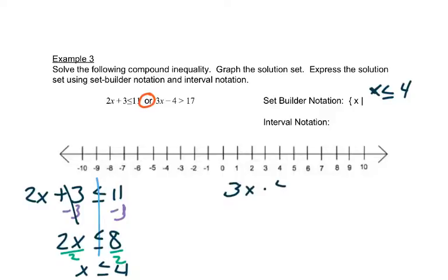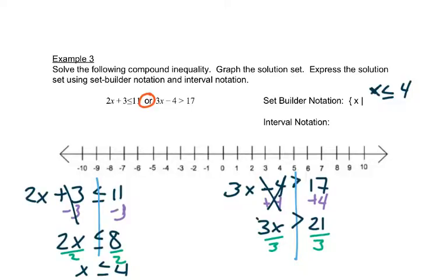So then we'll look at our other inequality. 3x minus 4 is greater than 17. So we'll draw our line down here. We'll add 4 to both sides. And then it gives us 3x is greater than 21. Then we'll divide both sides by 3. Again, it's a positive number, so it doesn't change the inequality sign. We have x is greater than 7. So the rest of our set builder notation would be OR x is greater than 7.